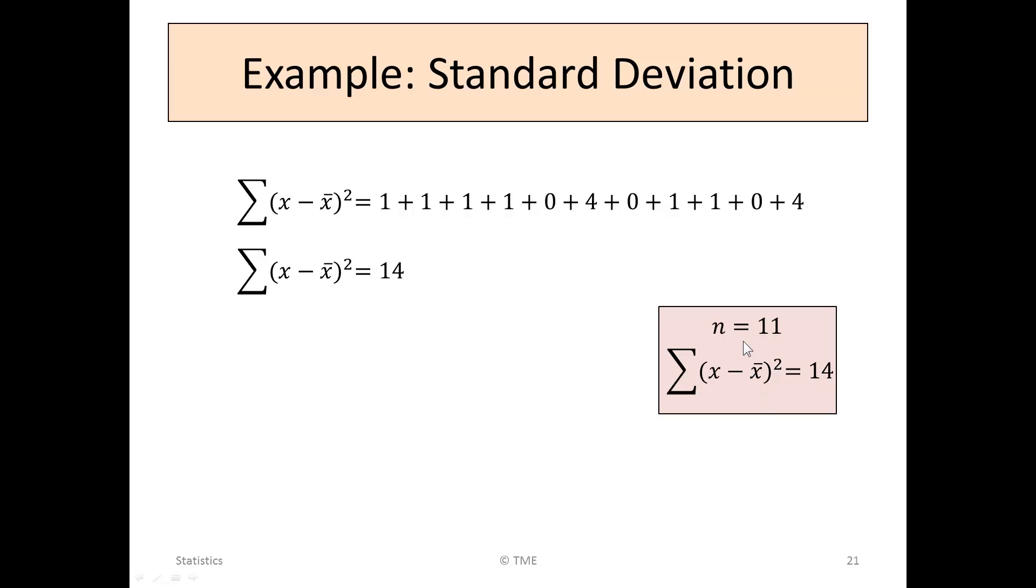So we now have two points of information. We know that the number of numbers is 11, and this intermediate value, sigma x minus x bar squared, is 14.